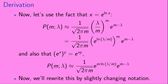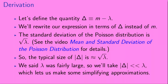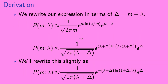Next, let's use the fact that x is equal to e raised to the power of the natural log of x. We'll apply that to the lambda over m in our expression for the Poisson distribution, replacing lambda over m with e to the natural log of lambda over m. Then, using the fact that e to the x all raised to the y power equals e to the xy, we replace e to the natural log of lambda over m all raised to the m power with e to the m times the natural log of lambda over m. Next, we define the quantity delta to be m minus lambda and rewrite our expression in terms of delta. The standard deviation of the Poisson distribution is the square root of lambda, so the typical size of the absolute value of delta is about the square root of lambda. Since lambda is fairly large, the absolute value of delta is much less than lambda, which lets us make some simplifying approximations.